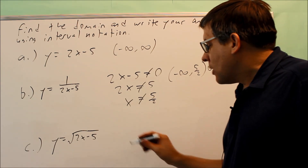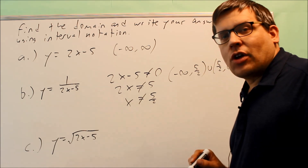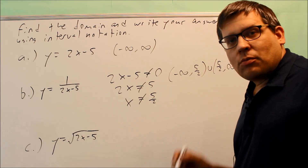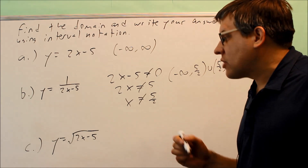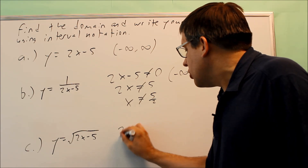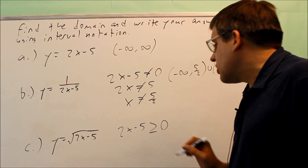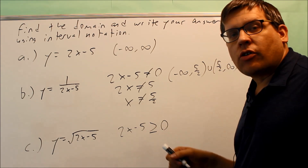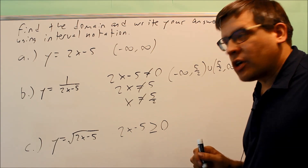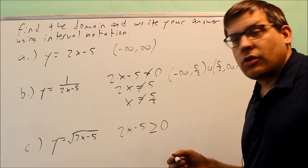For part C, we have a square root. You're not allowed to have any negative numbers inside the square root. It is okay to include 0, because the square root of 0 is 0. Whatever is inside the square root, you set it to be greater than or equal to 0 — positive numbers or 0 are allowed inside a square root.